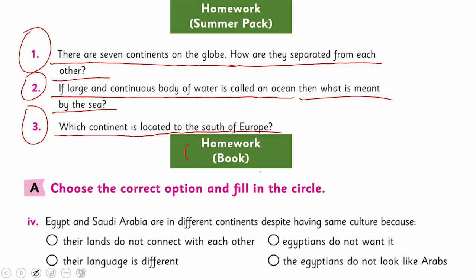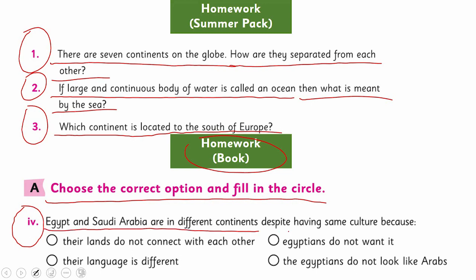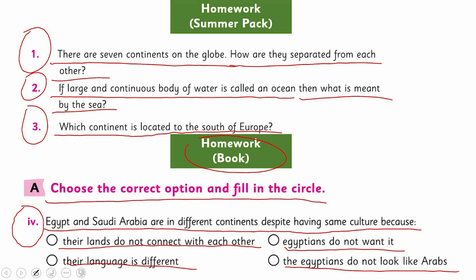Again, you have homework from your book — choose the correct option and fill in the circle. MCQ number 4: Egypt and Saudi Arabia are in different continents despite having the same culture. Why? Their lands do not connect with each other; Egyptians do not want it; their language is different; or Egyptians do not like Arabs. This is very easy — I already told you the basic principle of how continents are divided.